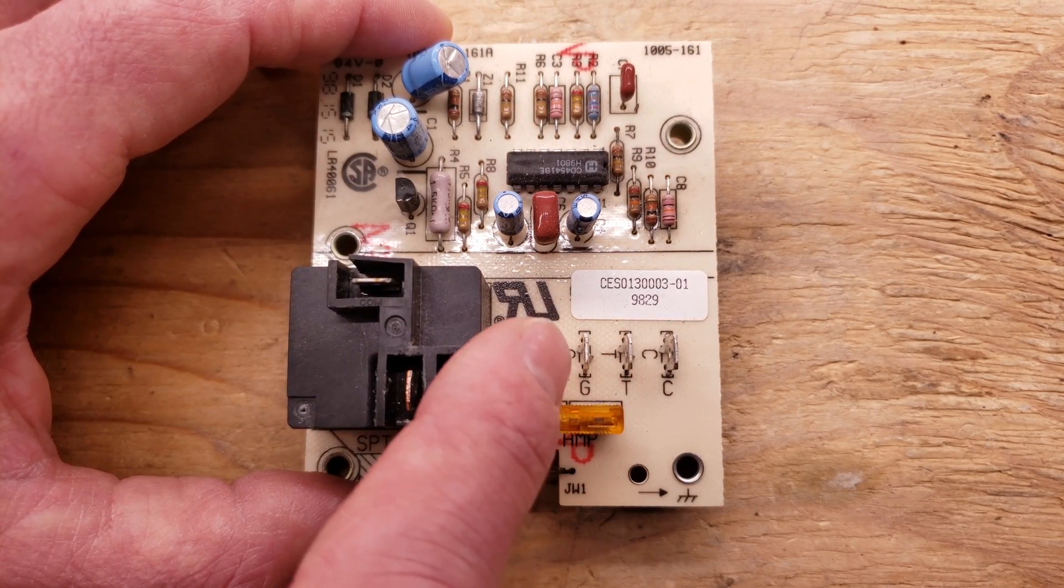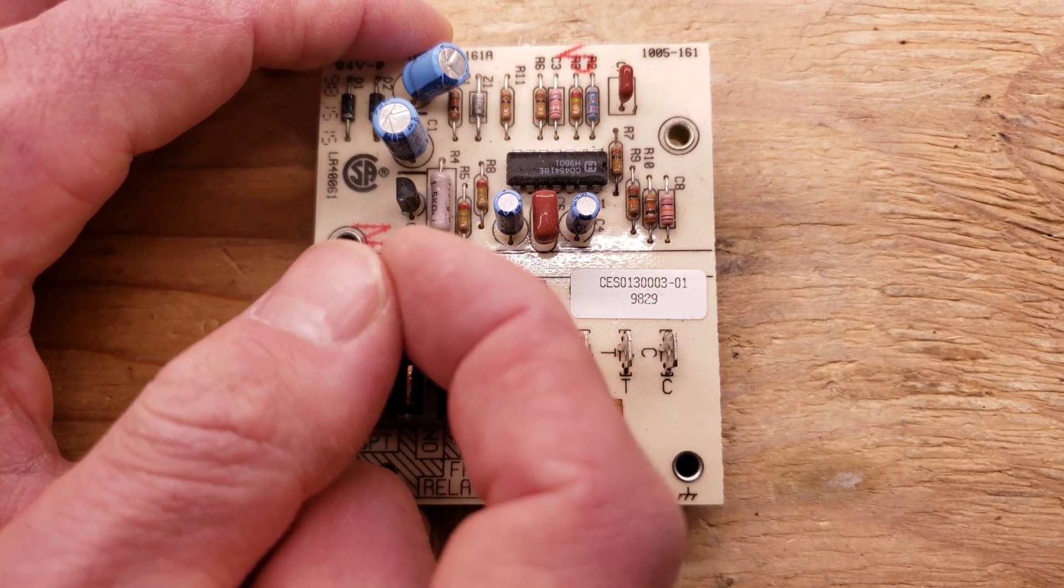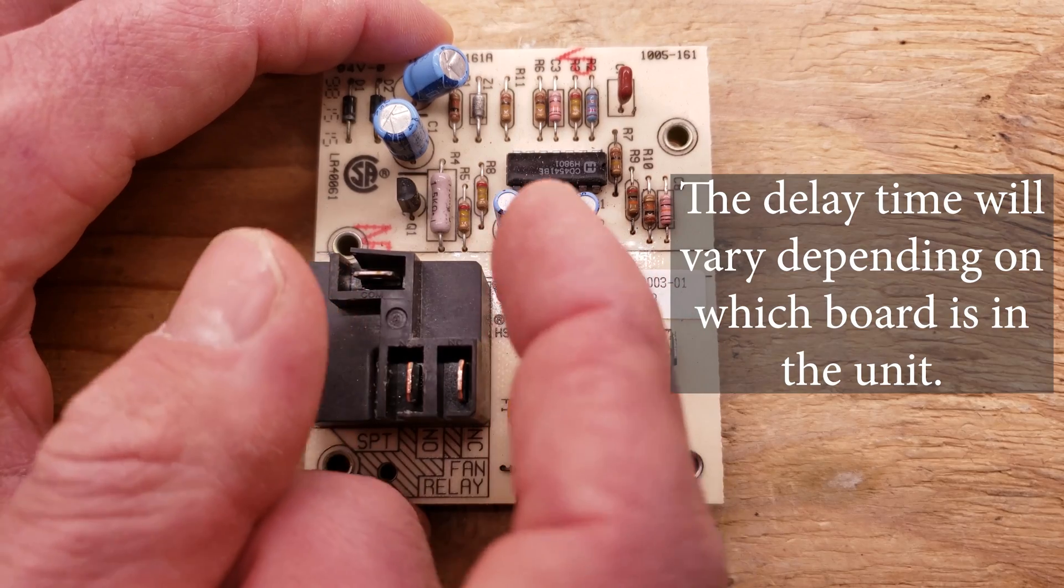Once you take the 24 volts off of the G terminal, it's going to then have a longer delay before the connections open back up again. That delay may be 30 to 90 seconds.